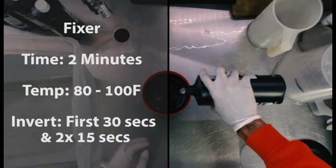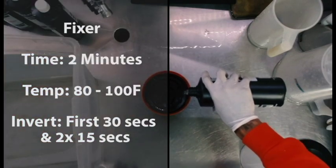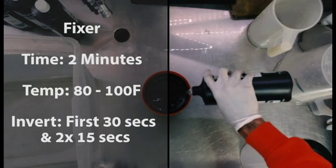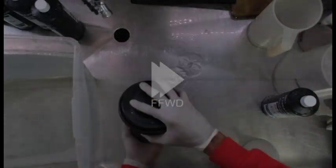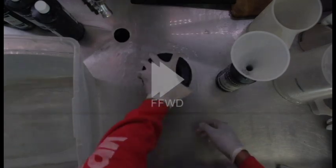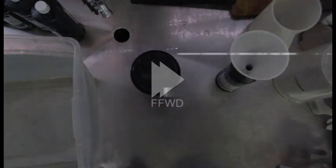After we exchange water three times, last step is the fixer. The fixer should be around 80 to 100 Fahrenheit. We're only going to do this for two minutes. So exactly like the bleach and developer, first 30 seconds, we're going to do inversions. Then the last minute is going to be 15 seconds of inversions twice.